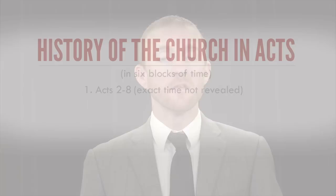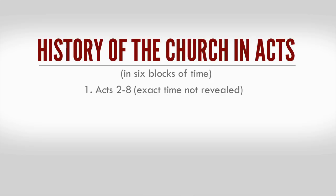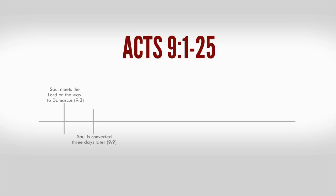Since the exact amount of time is not given, we will wait to approximate any time values until after we move through the next few blocks of time. Our second block of time is going to be Acts chapter 9, verses 1 through 25. This block of time is given to us by Paul. It begins with his encounter with the Lord on the road to Damascus, followed by his conversion three days later, Acts 9:9.